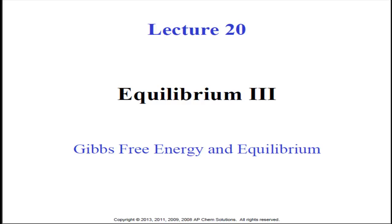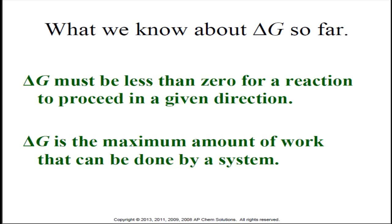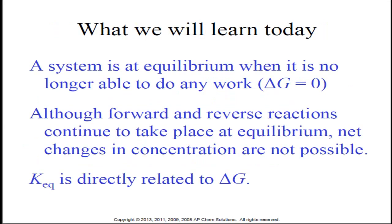Today we're going to learn about Gibbs free energy and how it relates to equilibrium. What we know about delta G so far: it must be a negative number for a reaction to proceed in a given direction, and it's the maximum amount of work that can be done by a system. Today we'll learn that a system at equilibrium, when it is no longer able to do any work, the delta G is going to equal zero. Although forward and reverse reactions continue to take place at equilibrium, net changes in concentration are not going to be possible, and we're going to look at how KEQ and delta G are related.